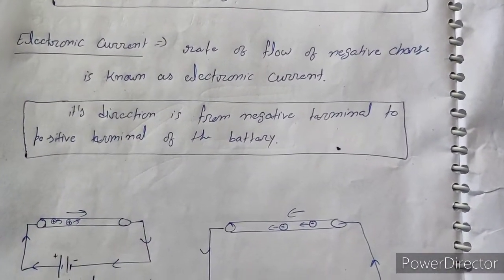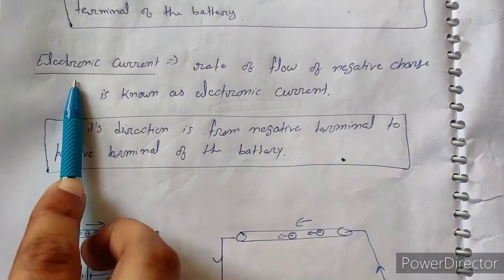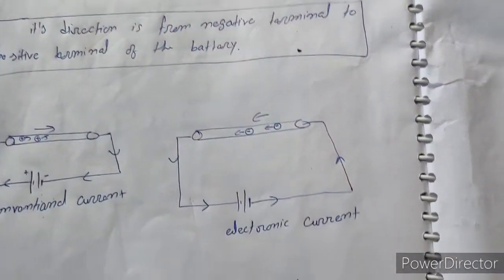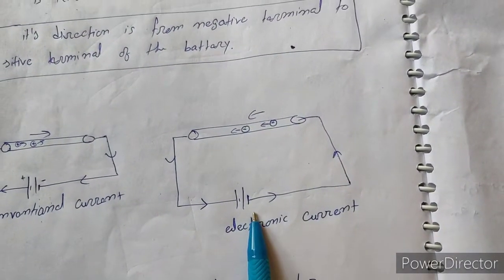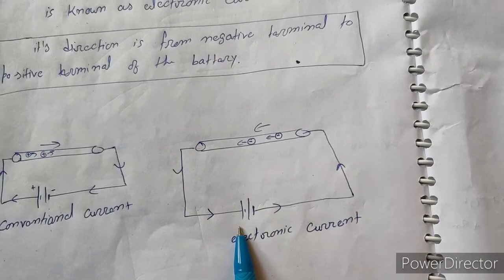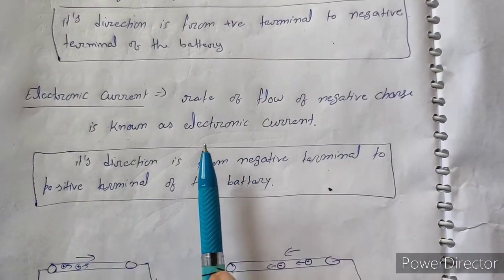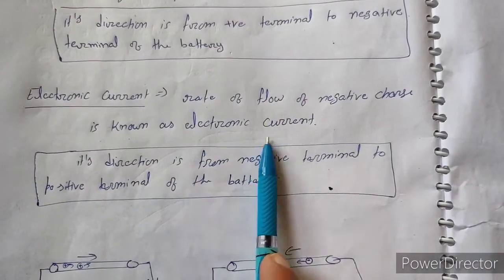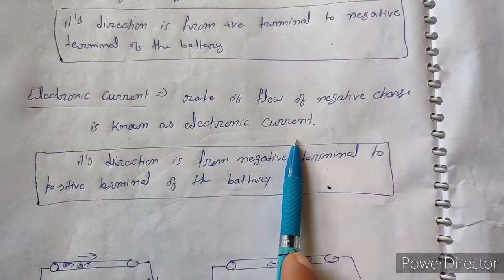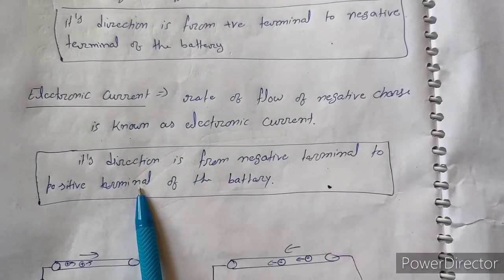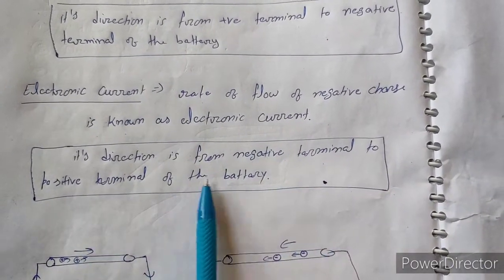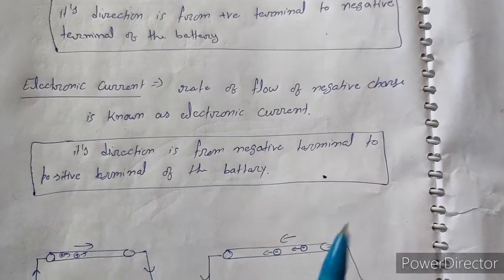Now, what about the direction of electronic current? Electrons flow from the negative terminal of the battery to the positive terminal of the battery. So electronic current — the rate of flow of negative charge — has its direction from the negative terminal to the positive terminal of the battery.